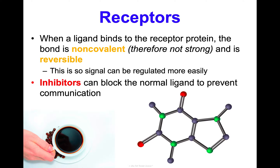Something that can happen at our receptors involves inhibitors — molecules that can block where a normal ligand is supposed to go, preventing communication. A great example is caffeine. Caffeine is a large polar molecule that binds to receptors on nerve cells in your brain, and its structure is very similar to adenosine. Adenosine binds to receptors after activity or stress and initiates feelings of drowsiness. Because caffeine has a similar shape to adenosine, it binds to the same receptor, preventing that receptor from activating a drowsiness response — so the person remains alert instead of feeling tired.